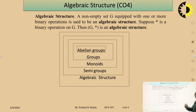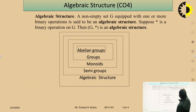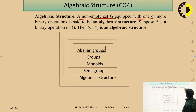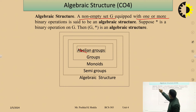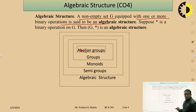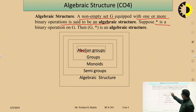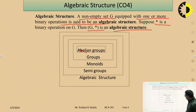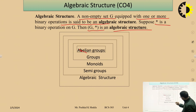Now, let's come to the topic of algebraic structure. What is algebraic structure? A non-empty set G equipped with one or more binary operations is said to be an algebraic structure. Suppose star is a binary operation on G, then (G, star) is an algebraic structure. This is shown in a diagram.